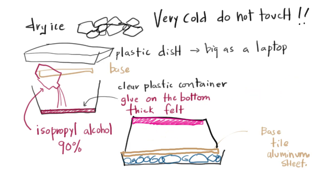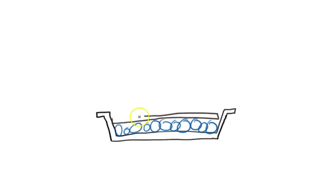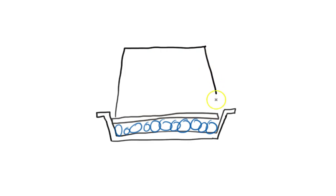Let's start fresh and look at everything we've got. You've got your plastic base right here. You've got your dry ice — chunks of dry ice — making everything super, super cold. And then you've got your base on top. Then covering the whole thing is your clear plastic container, and inside you have the felt that's filled with alcohol.